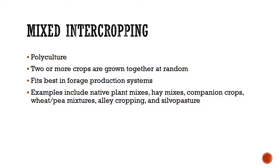Mixed intercropping is considered a polyculture because we're working with two or more crops, but it's more of a random type of setting. This is more so in the ranch-type setting for forages. We will mix different native plant mixes, which can go up to 30 or 40 different plant mixes — hay mixes, alley cropping, pea mixture, wheat mixture. In mixed intercropping, the crops are growing together at random, and not as much active management goes on compared to other polyculture systems.